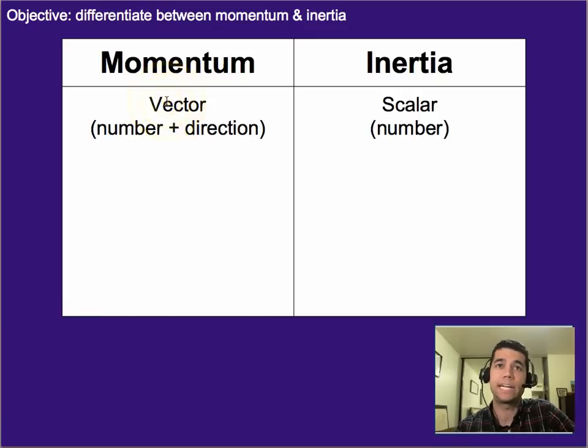Momentum is a vector, which means it has both a magnitude or number and a direction, whereas inertia is just a scalar, so it is just a magnitude or a number independent of direction.